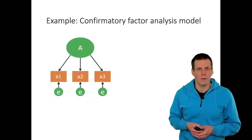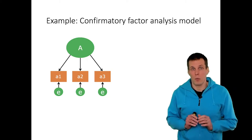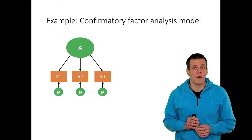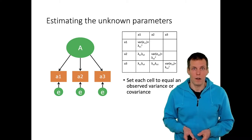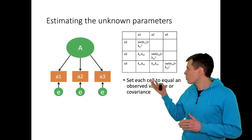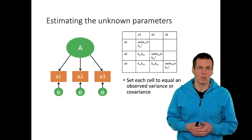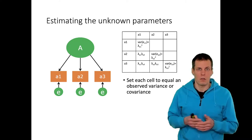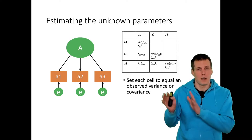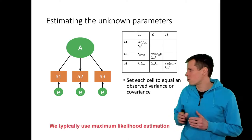Normally when we estimate latent variable models — let's use the factor analysis model as an example, but this applies to all latent variable models including random effects in multi-level models — we do something called a model-implied covariance matrix. Because this is a just-identified model, we estimate by setting these model-implied covariances equal to the observed covariances and solve the equations. For an over-identified model, we adjust parameters so that the implied and observed covariance matrices are as close as possible, measured using the maximum likelihood criterion.